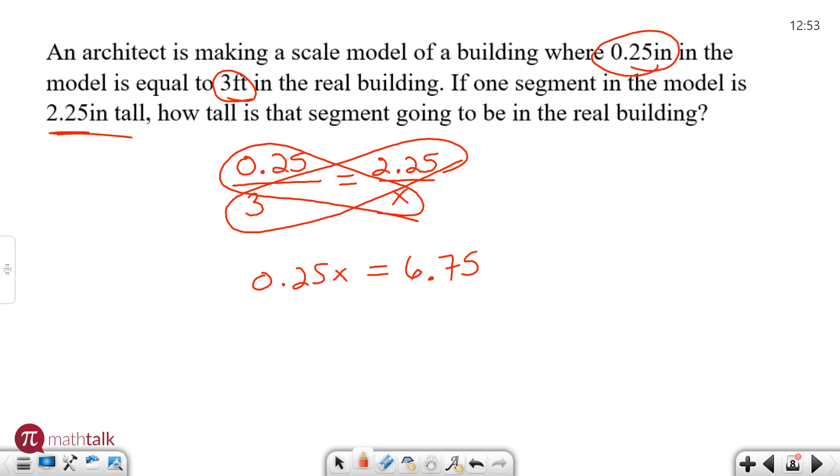Now you have a one-step equation where you can solve by dividing by 0.25. And so the 0.25's go away you're left with x equals whatever 6 divided by 0.25 is. So for me when I see problems like this dividing by decimals is not really fun but I know that this is the same thing as a quarter. If I divide by a quarter it's the same thing as multiplying by 4 so I usually do that instead. 6.75 times 4 is going to get me 27 feet. So that scale model which is two and a quarter inches is going to be 27 feet in the real building.